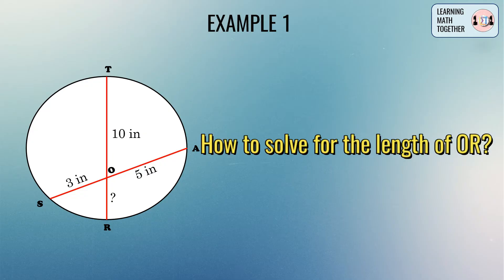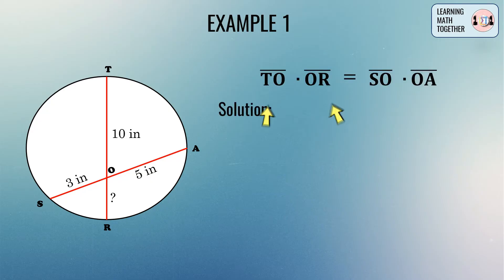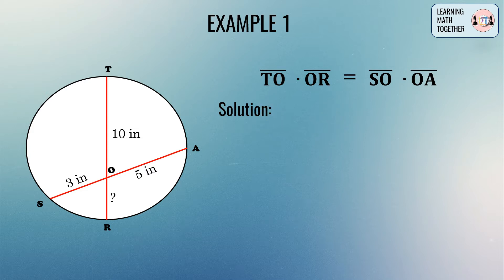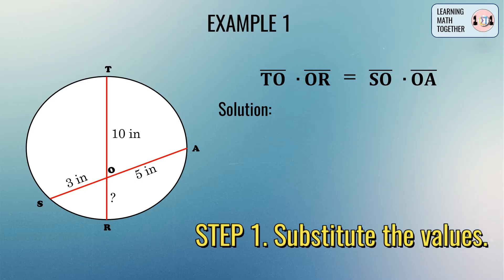To solve the missing length of this segment, we just have to apply the formula. We multiply the segments formed by one chord and equate that to the product of the segments formed by the other chord.